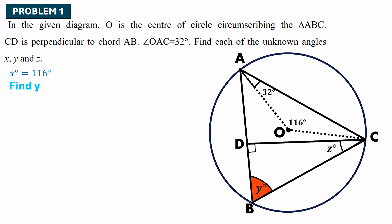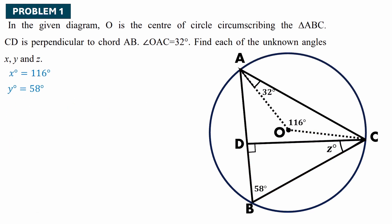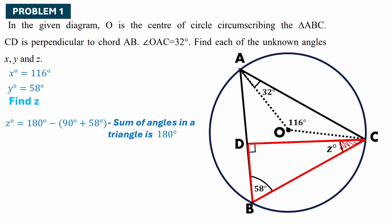Now let's find Z. Z is part of triangle BCD, where angle D is 90 degrees and angle B is 58 degrees. Using the triangle property, Z equals 180 minus (90 plus 58), which gives Z equals 32 degrees. So we have found X equals 116 degrees, Y equals 58 degrees, and Z equals 32 degrees.